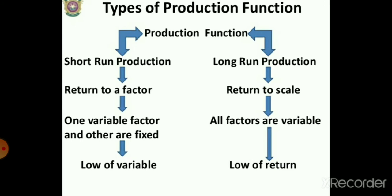Types of production functions: short-run production functions and long-run production functions. In the short run, one factor is variable while others are fixed — this relates to the law of variable proportions. In the long run, all factors are variable — this relates to returns to scale.